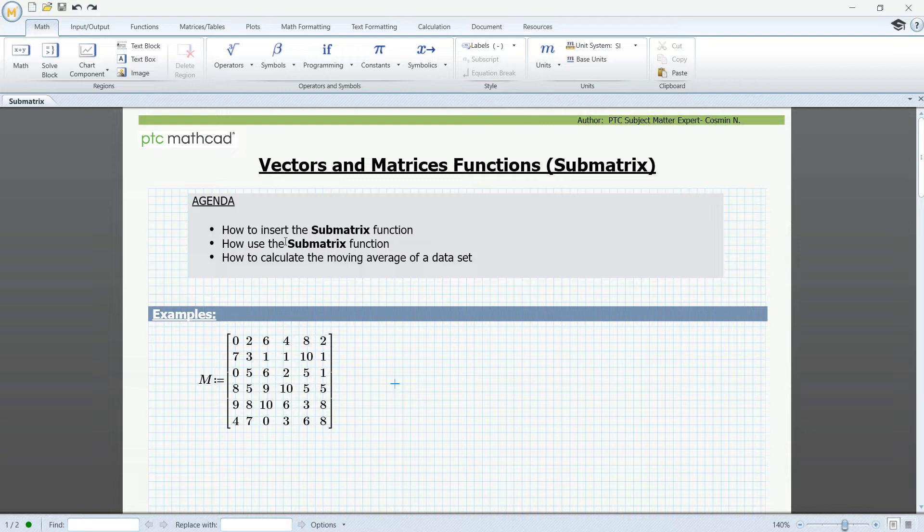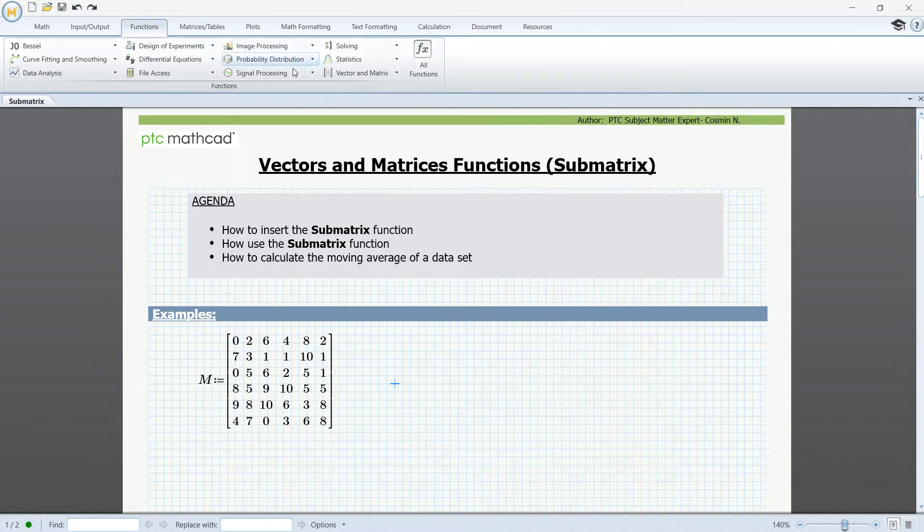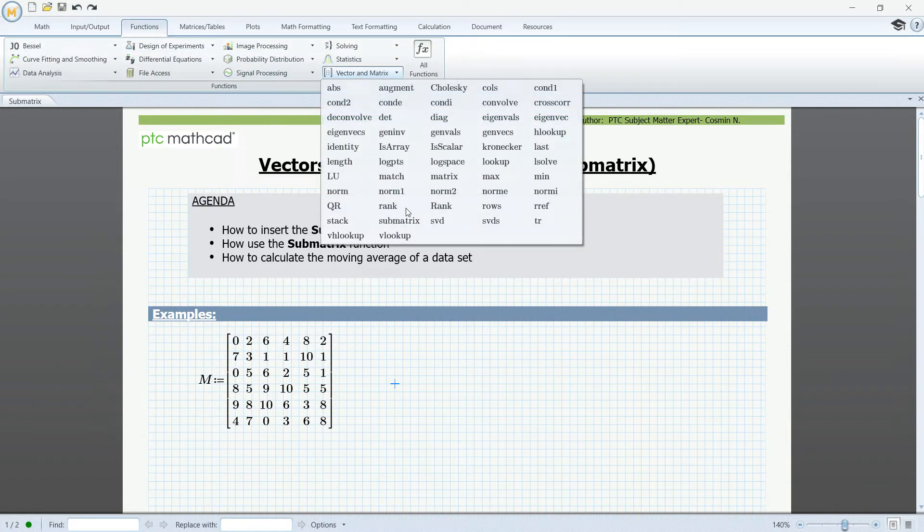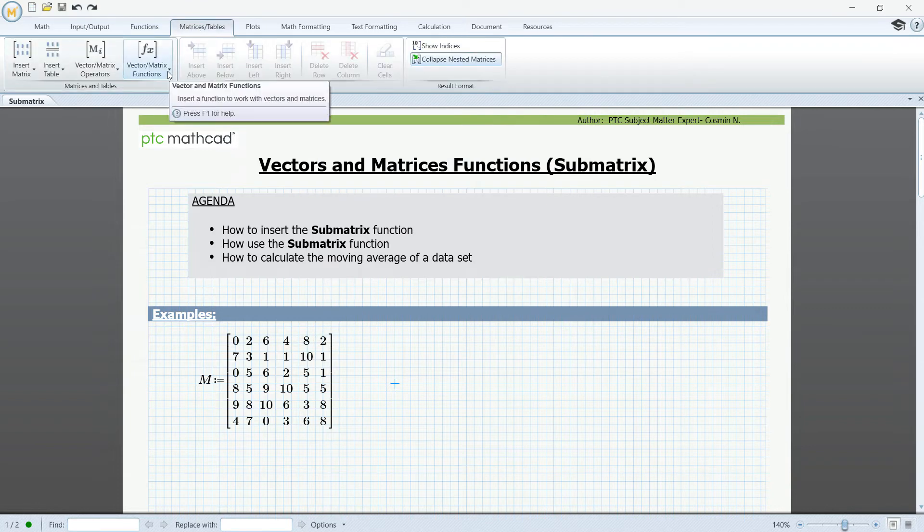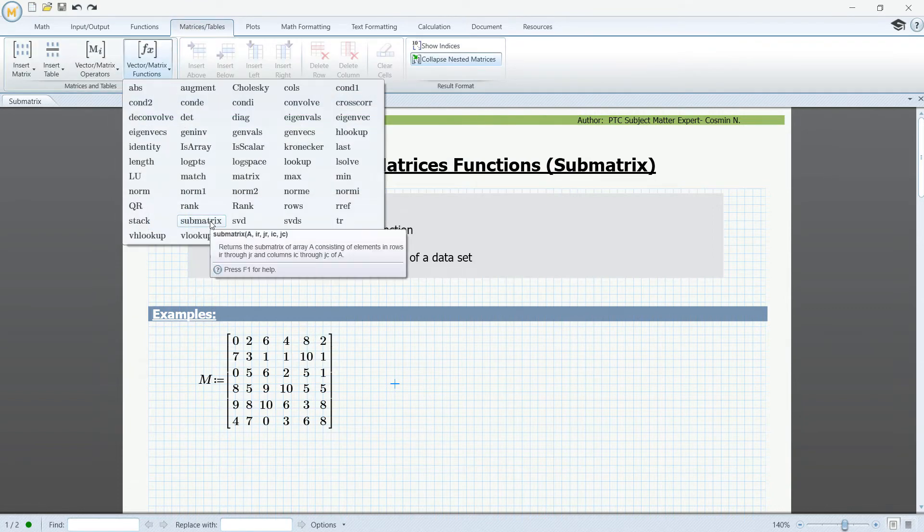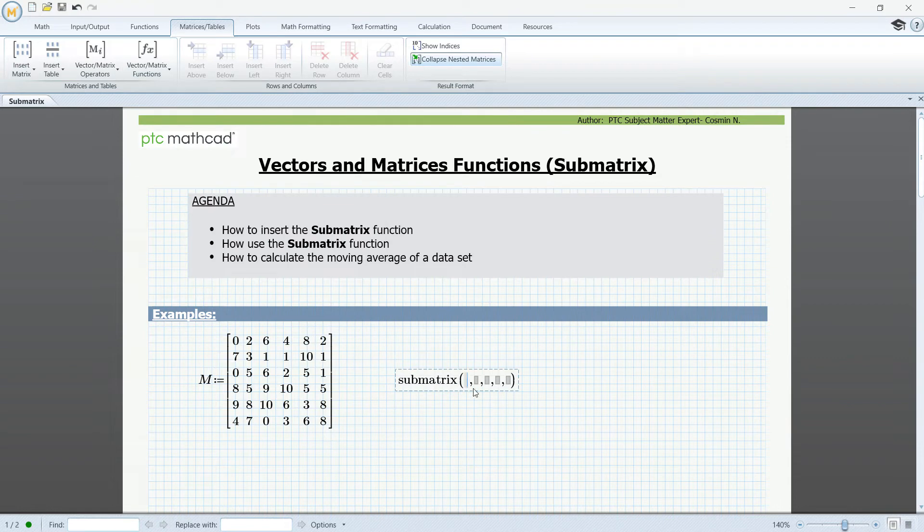The function can be inserted from the functions tab if we go to the vector and matrix drop-down, or by going to the matrices and tables tab under vector and matrix function and we can click on it to insert it.